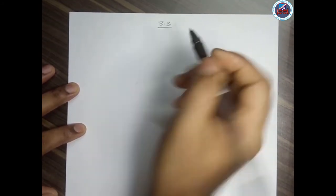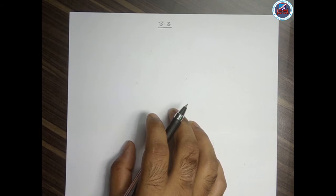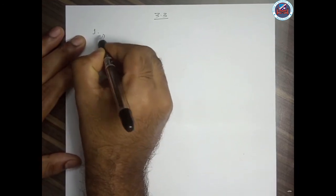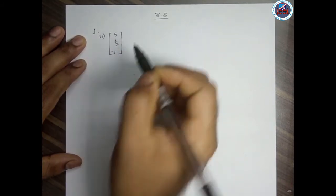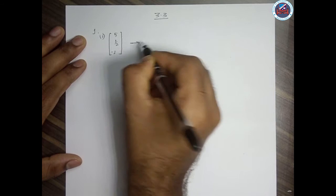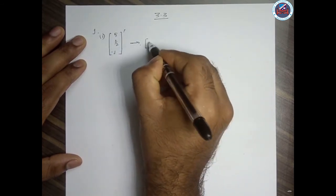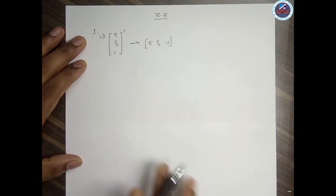Now let us see a few problems from exercise 3.3. Question number 1: find the transpose of the matrix [5; 1/2; -1]. Taking the transpose, the column becomes a row: [5, 1/2, -1]. The row has been changed to a column — that's it.